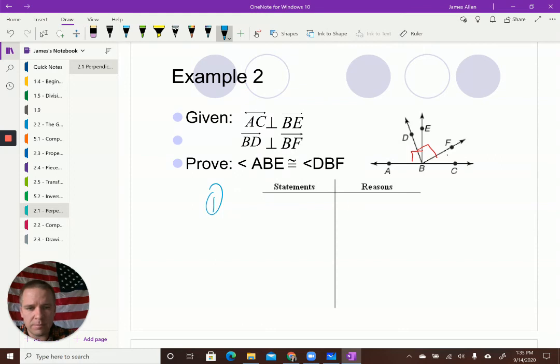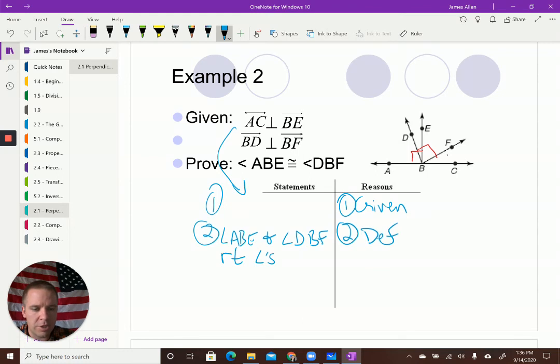but I do have to make sure that I write it out properly. So let's do that. So my first statement is my given. Second statement, well, we said they were right angles, right? So angle ABE and angle DBF are right angles. Beautiful. Definition, perpendicular. That's how I knew it. I knew I had perpendicular lines or rays, so I have right angles. Okay. I'm taking, how did I know that? I'm writing that down. That's how it works with proofs. So fun.